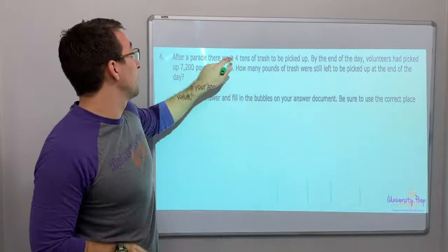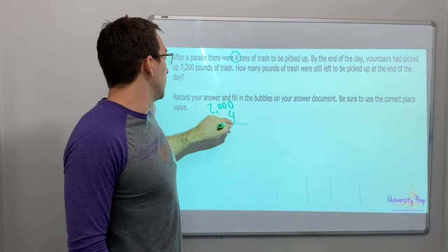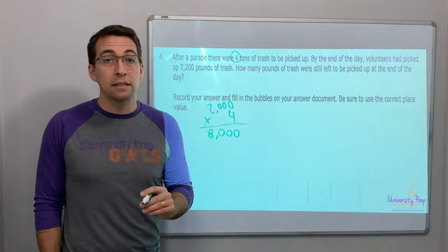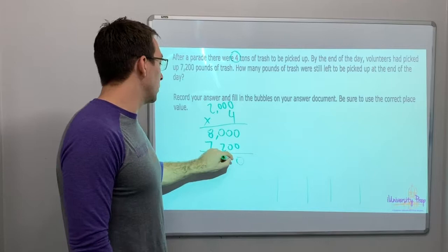One ton is 2,000 pounds. So if there's four tons, four times 2,000. Zero, zero, zero, eight. Eight thousand pounds needed to be picked up. Seventy-two hundred were picked up already.